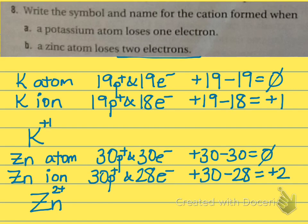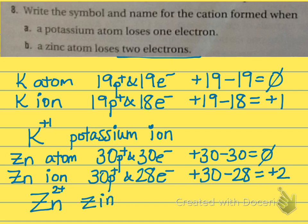I forgot to do the names. To name metals, we take the element name and add the word "ion" — so potassium becomes "potassium ion." We must include "ion" so we know it has a charge. Zinc would be "zinc ion."